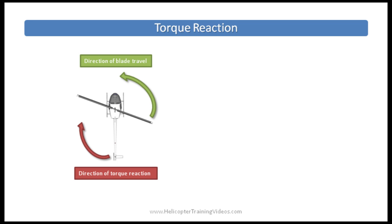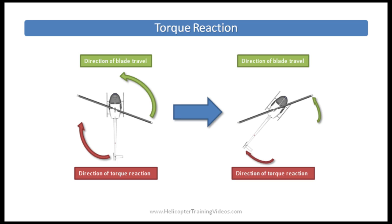Now if we didn't do anything else — if we didn't have a tail rotor or any way to counter this — this would result in the helicopter body spinning in the opposite direction to the way the blades are spinning. If you've ever seen an accident video where the tail rotor has been lost on a helicopter, that's pretty much what they end up doing — Blackhawk Down, that kind of stuff.